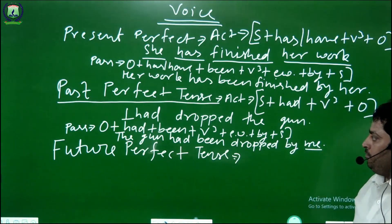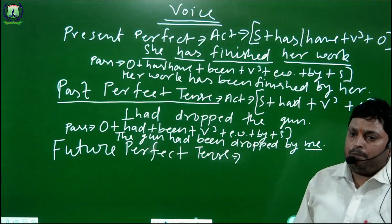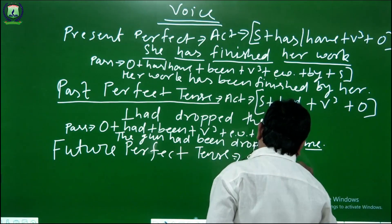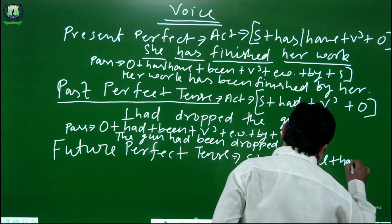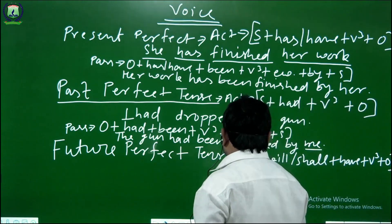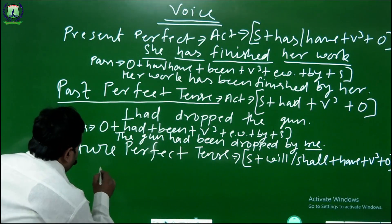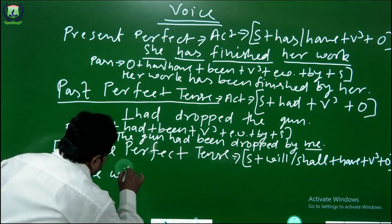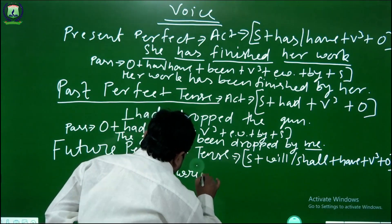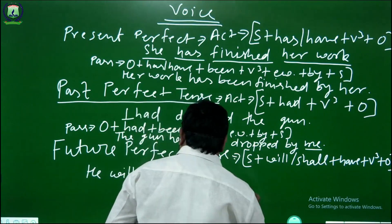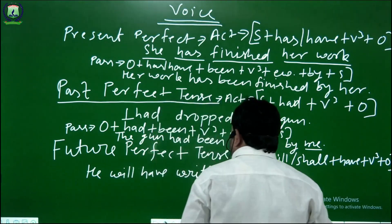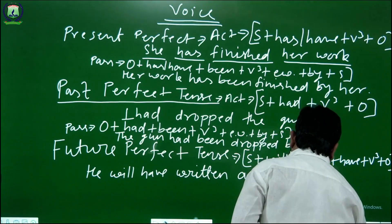Now next and last — future perfect tense. The structure of future perfect tense active voice will be: subject plus will or shall plus have plus third form of the verb plus object. For example: he will have written a letter to his father.